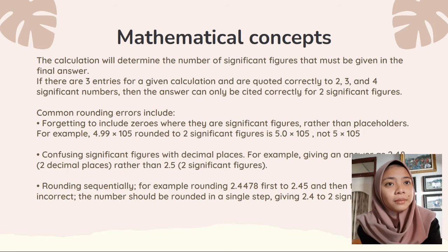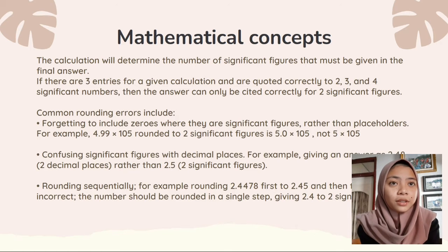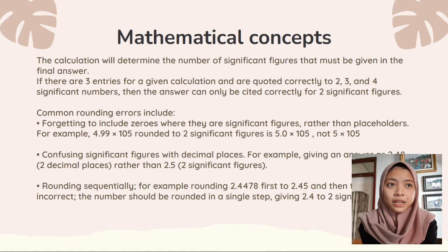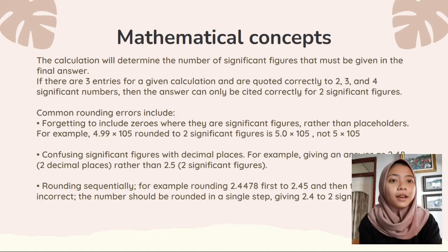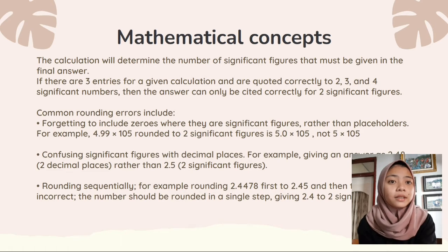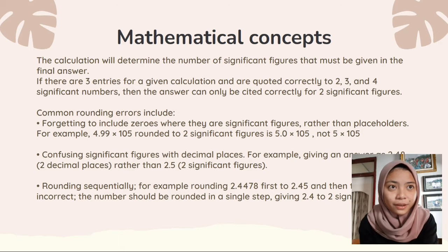Common rounding errors include: First is forgetting to include zeros when they are significant figures, rather than placeholders. For example, 4.99 × 10^5 rounded to two significant figures is 5.0 × 10^5, not 5 × 10^5.